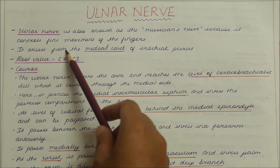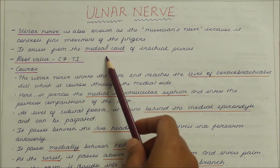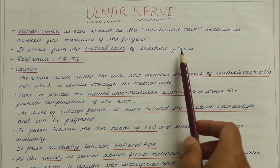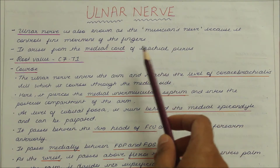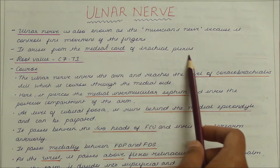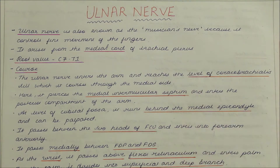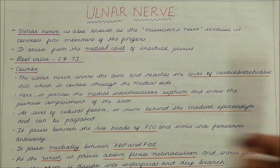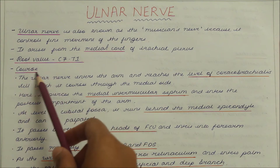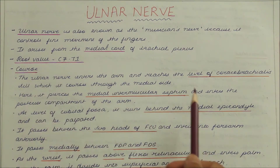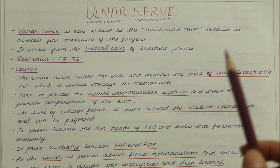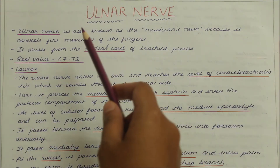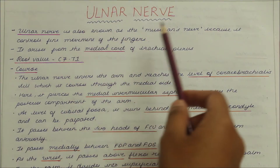The ulnar nerve arises from the medial cord of the brachial plexus. For those of you who haven't seen my video on brachial plexus, please refer to my channel playlist. In this video we will be learning about the root value, the course, the relations, branches, and clinical anatomy of the ulnar nerve.